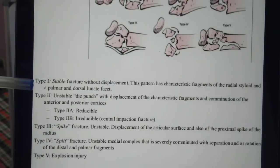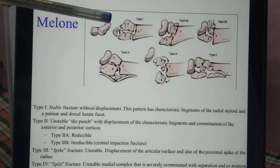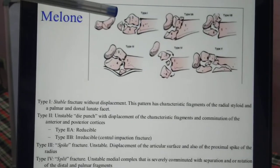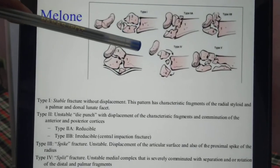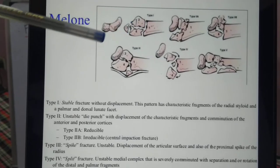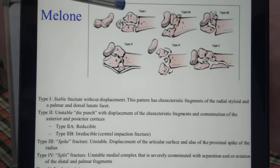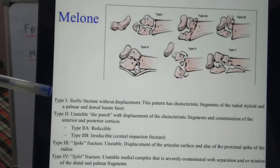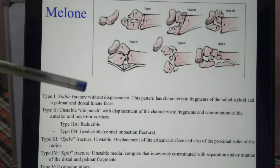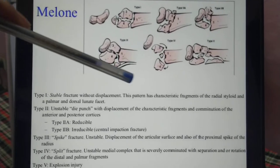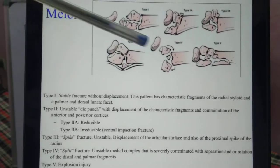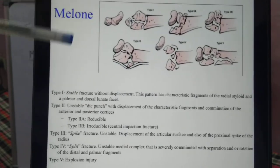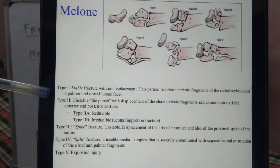Type 1 is a stable fracture without any displacement. The fracture is divided into four parts and can be reduced by closed reduction.